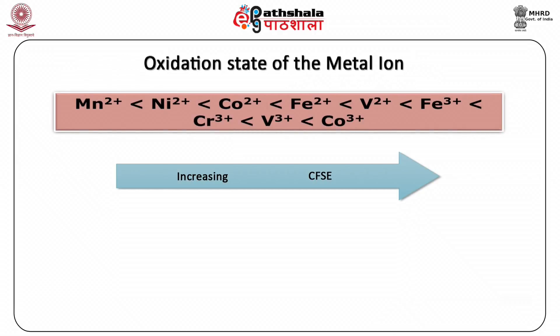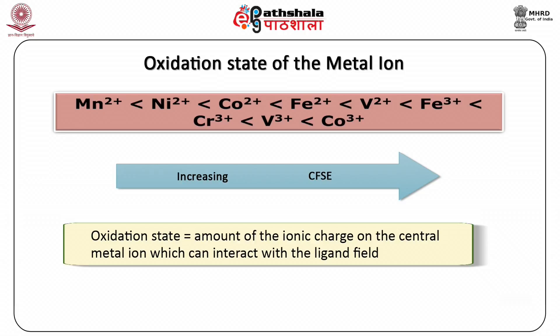Regarding the oxidation state of the metal ion: higher the oxidation state of the metal ion, higher will be the splitting value. The oxidation state defines the amount of ionic charge on the central metal ion which can interact with the ligand field. Thus, higher the ionic charge available for the interaction, higher will be the value of splitting.